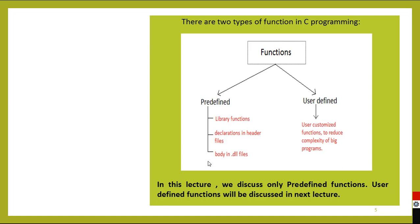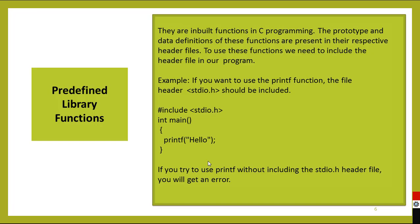Header files for library functions in C programming. C has many libraries with predefined functions in the form of header files. To use these functions in code, we need to include these header files. Header files contain definitions of the functions and data types which we can use directly in our program by including the respective header files. The syntax for including header files in a program is: #include filename.h — where .h is the file extension. All header files should have a .h extension.